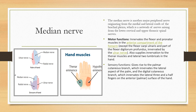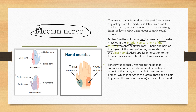The median nerve is very important because it supplies most of the muscles of the hand. It innervates the flexor and pronator muscles in the anterior compartment of the forearm. It also provides innervation to the thenar muscles and the lateral two lumbricals in the hand.